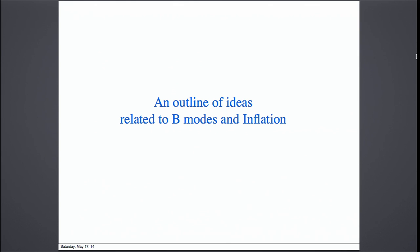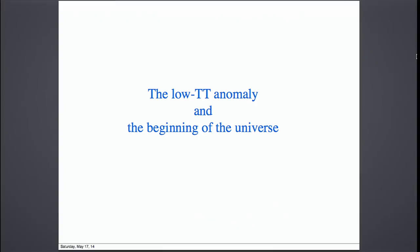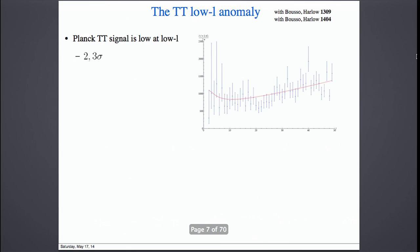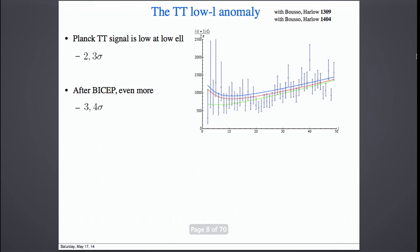Since the results are a bit unclear, I will outline a few ideas related to the B-modes and inflation which will last no matter what the result of BICEP r is. I will start with the low-TT anomaly and the beginning of the universe. We know that Planck's TT signal is low at low multipoles. This is about a 2-3 sigma anomaly. And if you put the BICEP results, this becomes a 3-4 sigma anomaly.